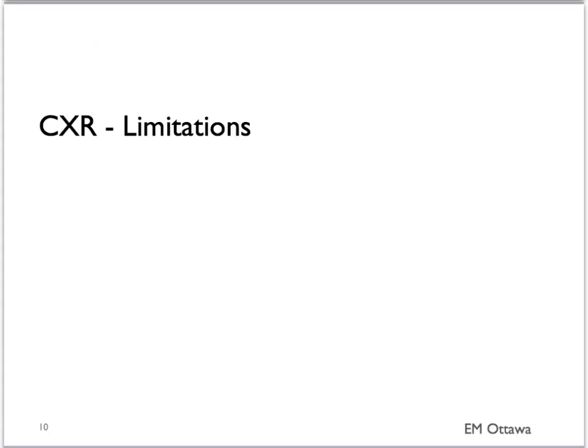To summarize, the limitation of chest X-ray is that it cannot detect small pneumothoraces, and it is challenging to diagnose a pneumothorax in a patient who is supine.